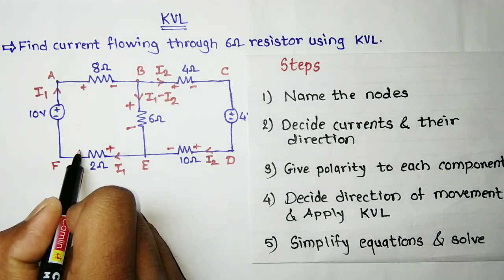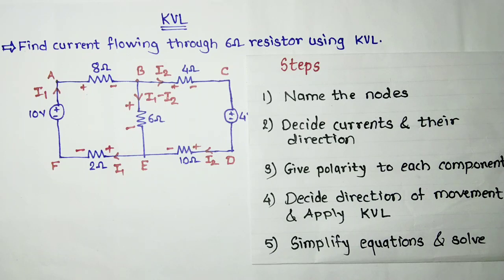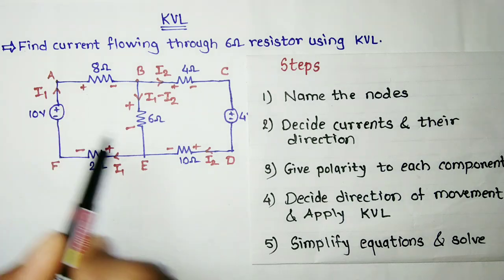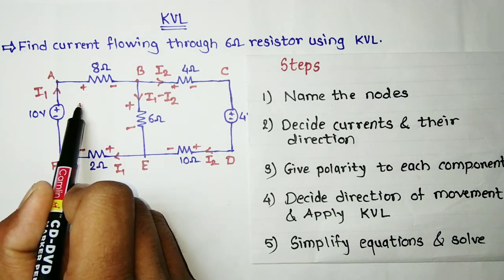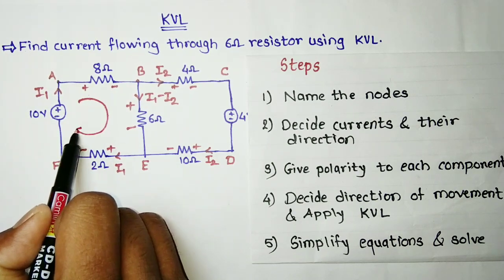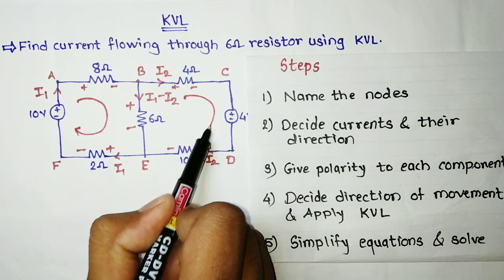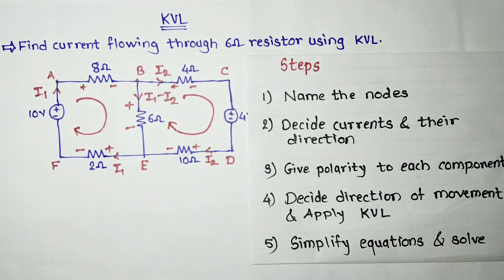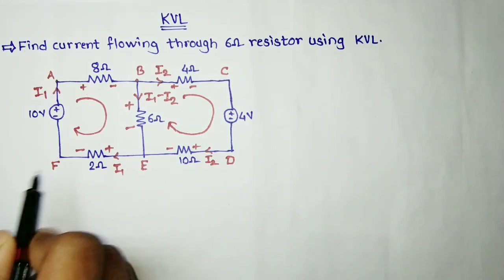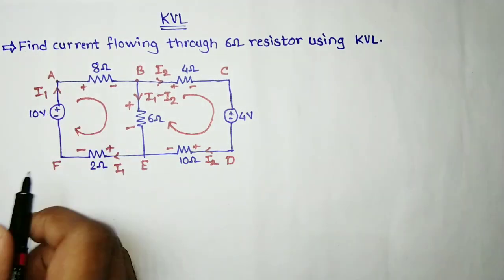The current I1 is flowing from E to F, so it is positive here and negative there. Next step: decide the direction of movement and apply KVL. You can move clockwise or anti-clockwise. Let us decide the direction of movement as A to B, E, F, and back to A — the clockwise direction. Then we will apply KVL and simplify and solve the equation.